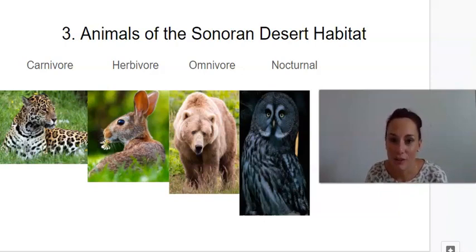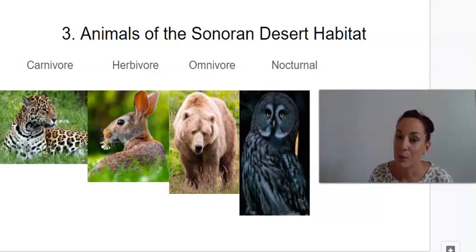Our first vocabulary word is carnivore. Say carnivore. Carnivore eats meat. The next word is herbivore. Say herbivore. An herbivore eats plants. The next one is omnivore. Say omnivore. An omnivore eats both meat and plants. And our last vocabulary word is nocturnal. Say nocturnal. And nocturnal means you're active or you're awake at night.